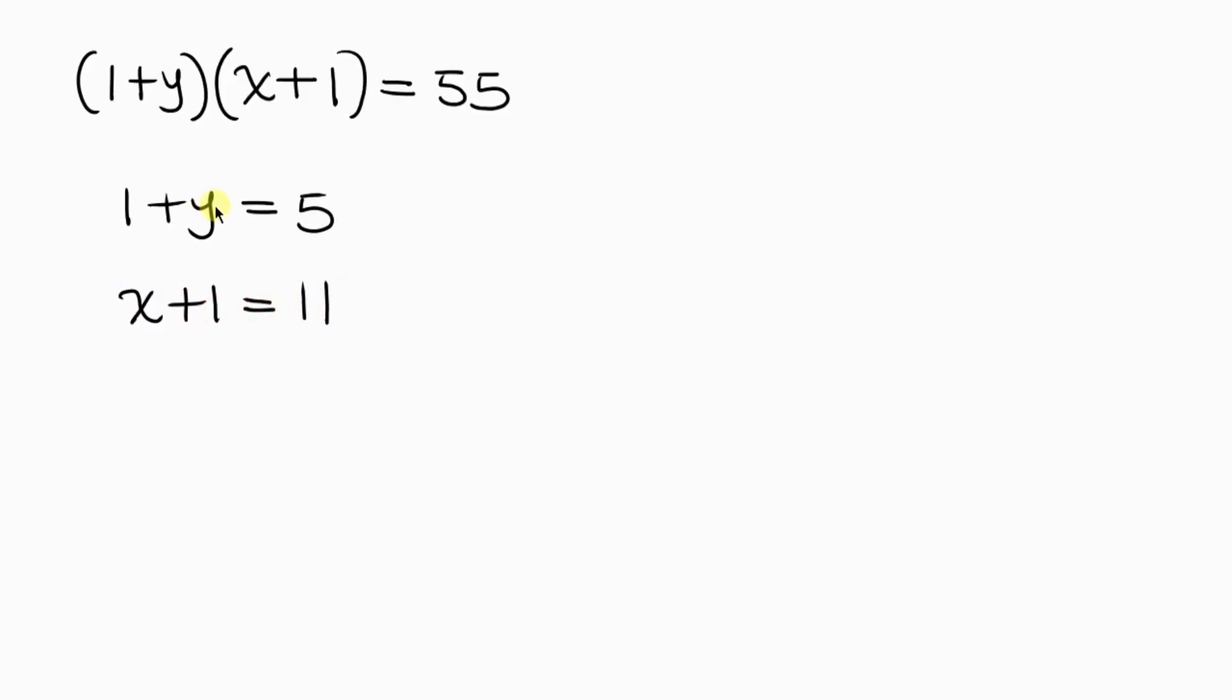So for this first factor I have to move 1 to the right in order to get the value of y. So y will be equal to 5, and as 1 crosses to the right it becomes minus 1. So 5 minus 1 is 4.